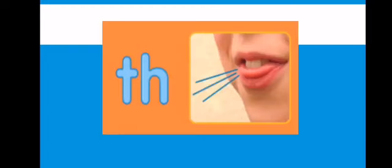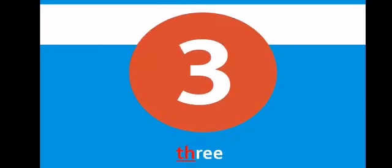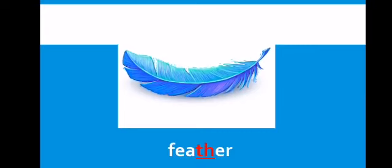The second sound we have is the sound TH. And sometimes it is pronounced Z. Some of the words for this sound are: MOTH, number THREE, and FEATHER.